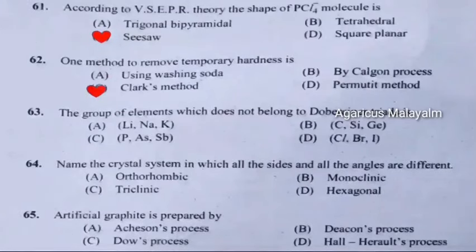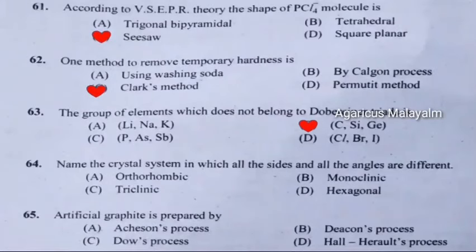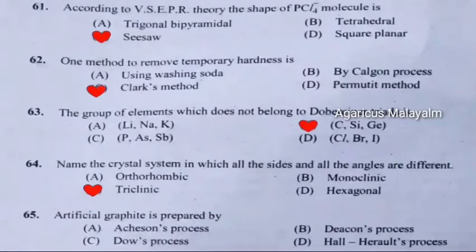Question 63: The group of elements which does not belong to Dobereiner triads is. Correct answer is Option B. Question 64: The name of the crystal system in which all the sides and all the angles are different. Correct answer is Option C: Triclinic. Question 65: Artificial graphite is prepared by. Correct answer is Option A: Acheson process.